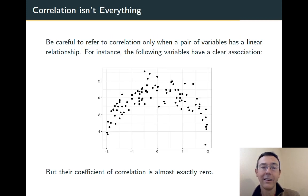If it's not a linear relationship, for example, here, the coefficient of correlation doesn't really have meaning. For example, here, the x and y variables have a clear association. There's this sort of parabolic shape. But if we were to actually compute correlation, we would get a value almost exactly 0.